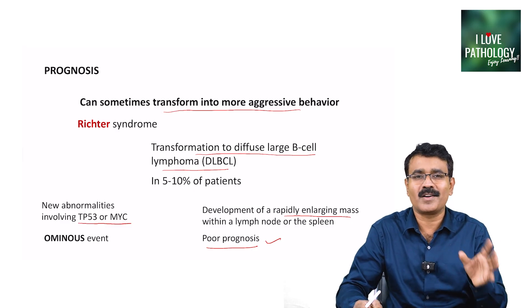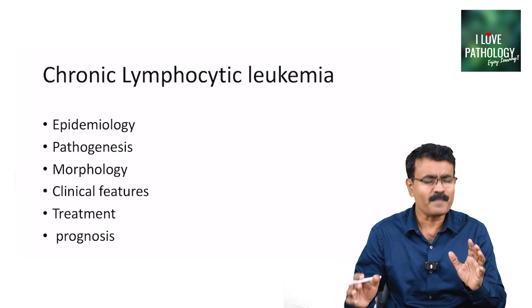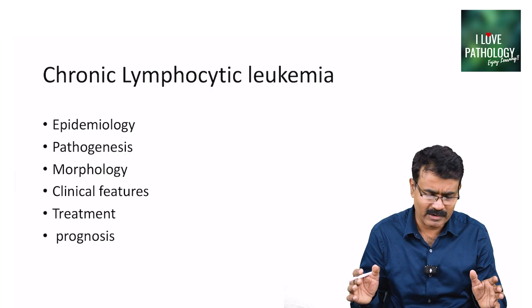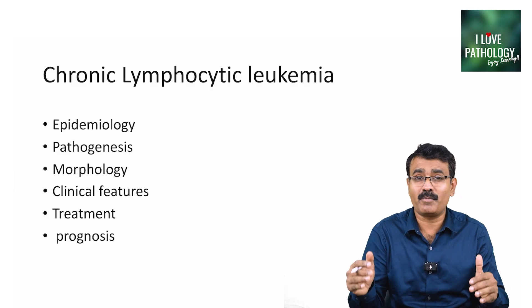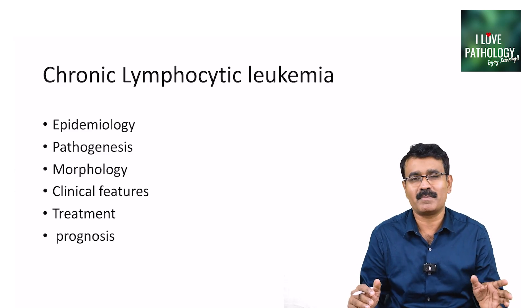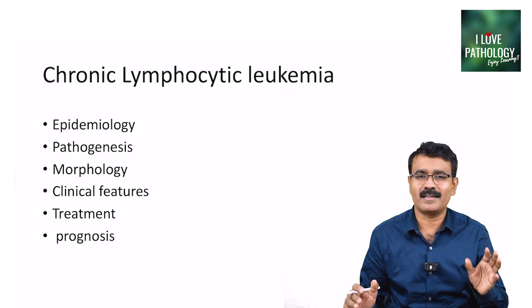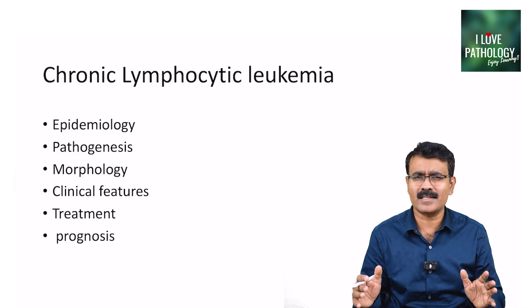That is all about chronic lymphocytic leukemia. We have looked into the epidemiology, pathogenesis, morphology, clinical features, staging systems — remember the very important staging systems — and treatment and prognosis of CLL. With this, I have completed all the WBC neoplasms, covering acute myeloid leukemia, chronic myeloid leukemia, acute lymphoblastic leukemia, and chronic lymphocytic leukemia. Thank you very much. Thanks for watching.